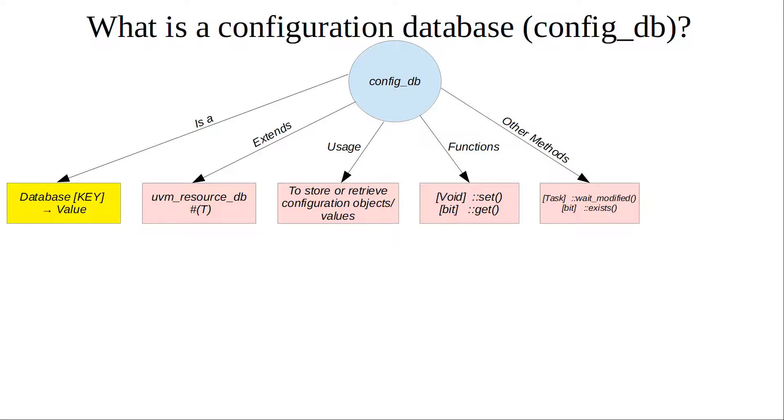Some limitations: you want to set an object or value before you can get it. The context, or the parameter name for both set and get functions, is going to be of type uvm_component.